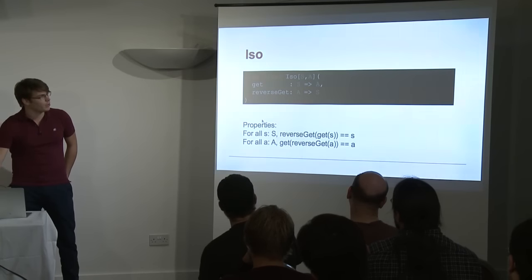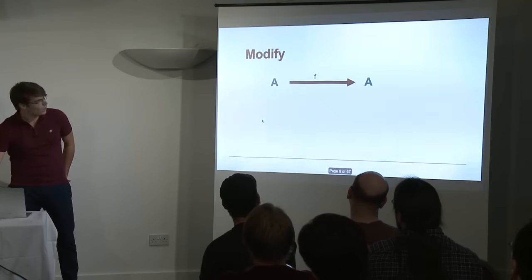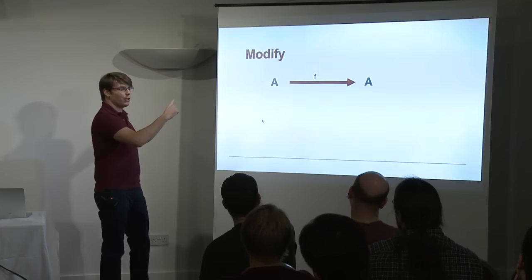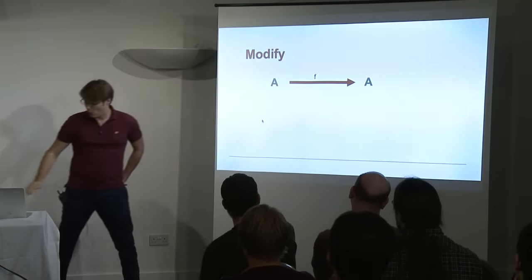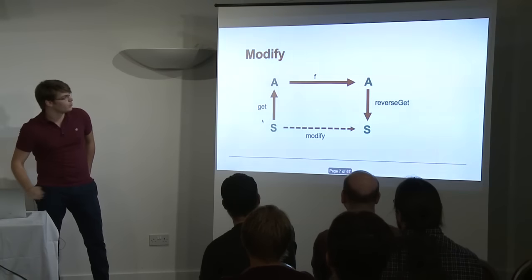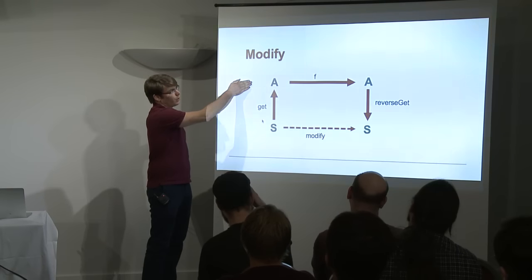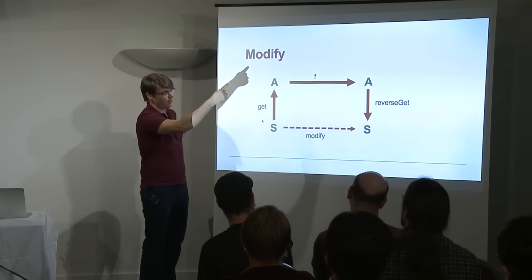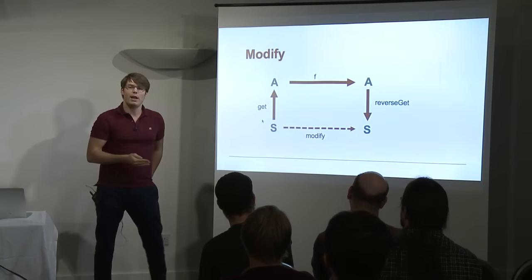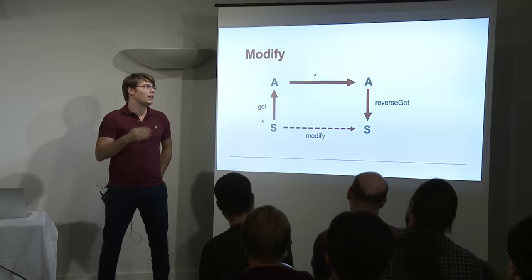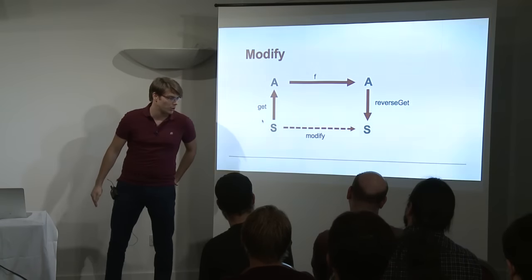We have an ISO. Let's try to see what sort of useful functions we could derive out of this. If we have a function F from A to A, we can lift it from S to S. How do we do that? We simply use get and reverse get. We say: if we have an S, we go to A using get, then we apply our F, then reverse get again. So basically when you have an ISO between S and A, you can lift any function A to A to a function S to S, which is quite useful.